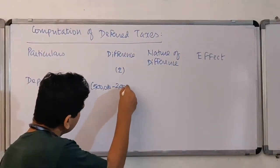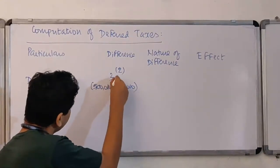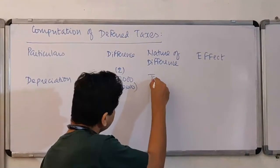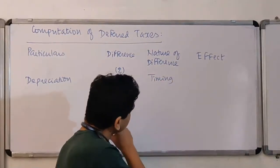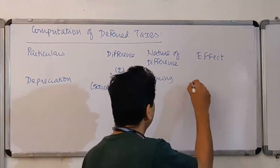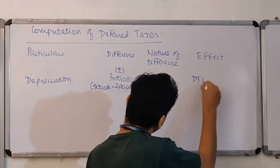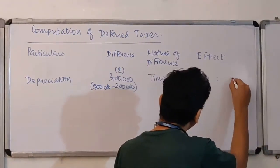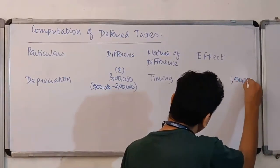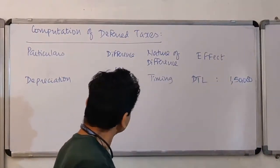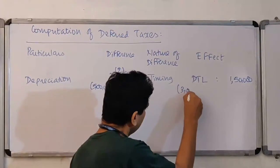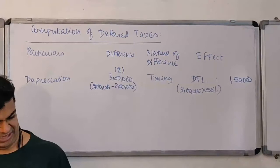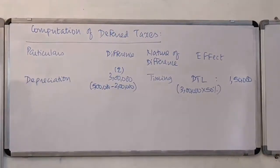Depreciation. Five lakhs and two lakhs is there. It is three lakhs. It is a timing difference. We will set DTL. One lakh fifty thousand. Three lakhs into fifty percent. Take the difference and multiply that with the tax rate.